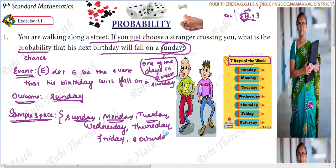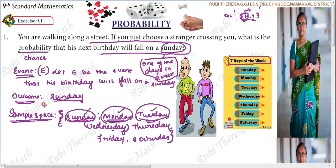The total outcomes are called the sample space. Each individual outcome is called a sample point. Total output is the sample space, but each individual one is a sample point. So the key terms are: event, outcome, and sample space. The expected result is called the outcome, or favorable result. All the seven days will be called the sample space.